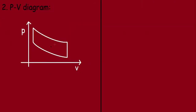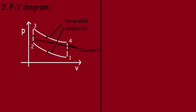This is the PV diagram for the Otto cycle, with points labeled 1, 2, 3, and 4. The Otto cycle has two reversible adiabatics — from 1 to 2 and from 3 to 4 — and two isochores (constant volume processes) from 2 to 3 and from 4 to 1.